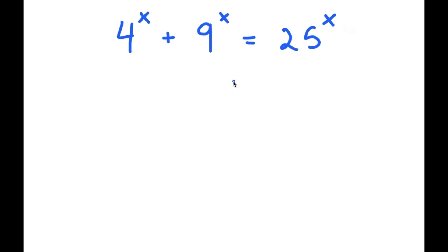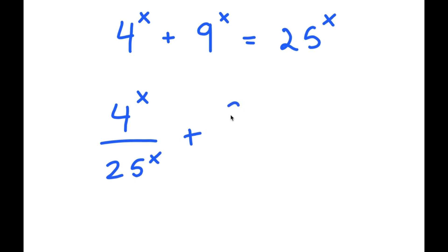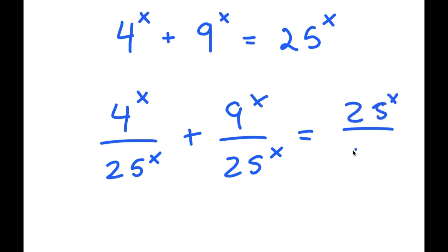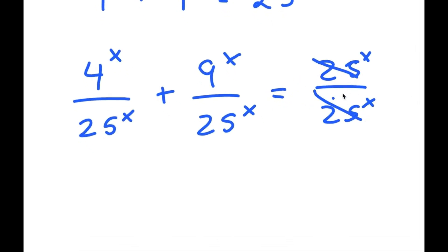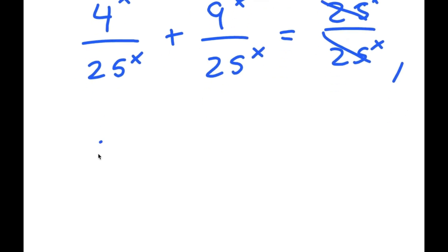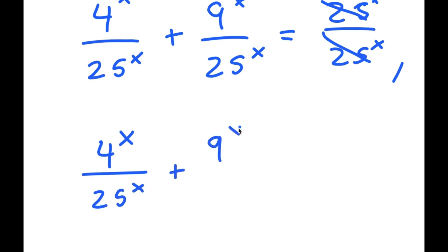To solve this, I'm going to start off by dividing every term by 25 to the power of x. So I get 4 to the power of x divided by 25 to the power of x, plus 9 to the power of x divided by 25 to the power of x, is equal to 25 to the power of x divided by 25 to the power of x. The 25 and 25 cancel out to give 1, so now I have 4^x over 25^x plus 9^x over 25^x is equal to 1.